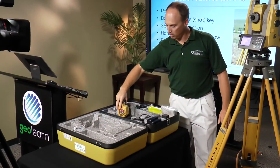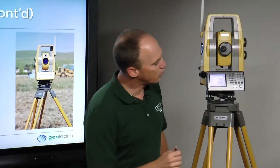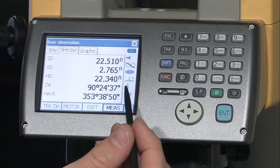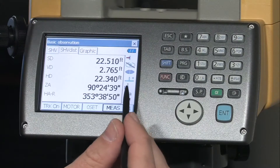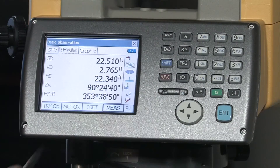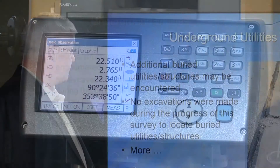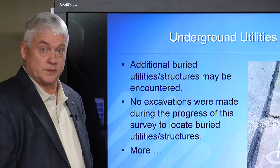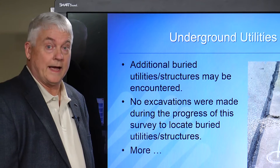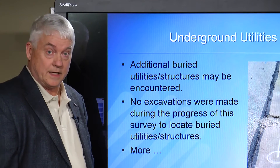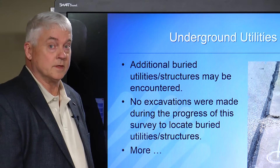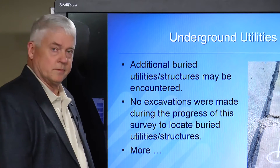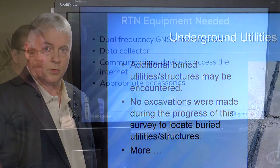If you'll notice, when we connected, the little icon — the green antenna — shot straight up. No excavations were made in preparing this plat or this design survey, this map. That's usually the case, unless it's been potholed, of course.